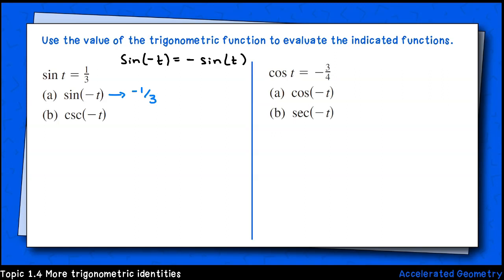For part b, we need to find csc(-t). Well, cosecant is the reciprocal of sine, so we'll need to start there. csc(t) = 1/sin(t). If sin(t) = 1/3, then csc(t) will be 3/1, or just 3. Next, recall that cosecant is an odd function. So if csc(t) = 3, then csc(-t) will be -3.